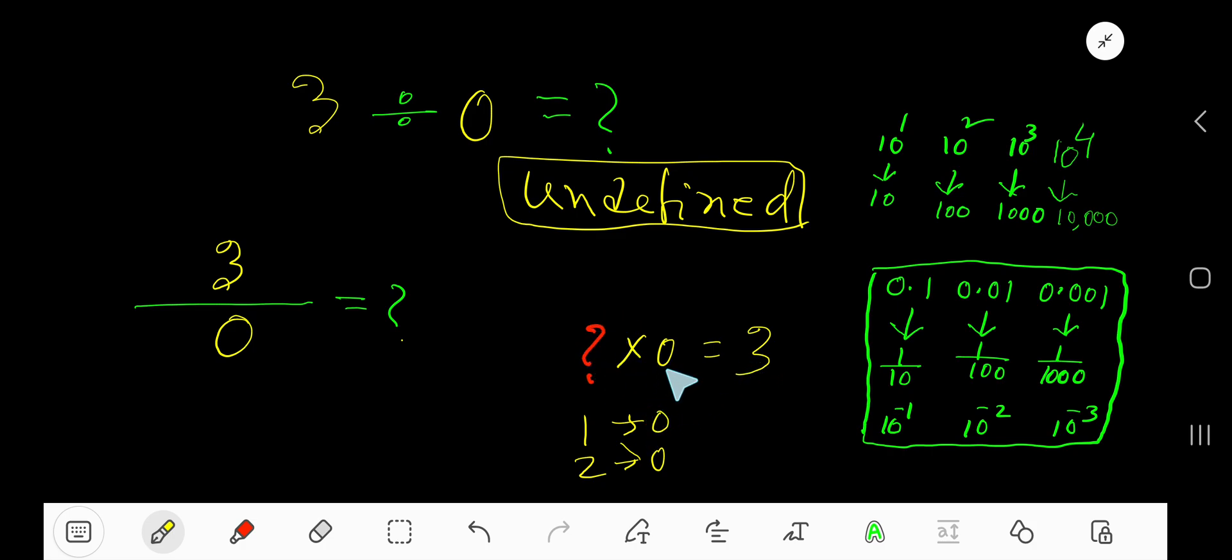that multiplied by zero gives us three. That is why we are not getting any answer. That is why we say three divided by zero is undefined.